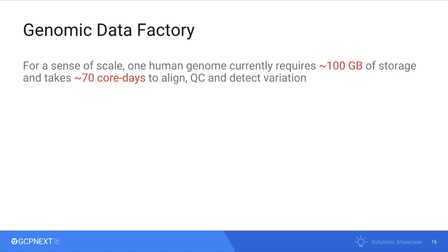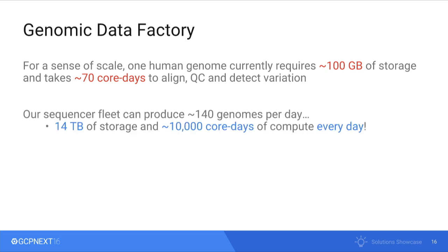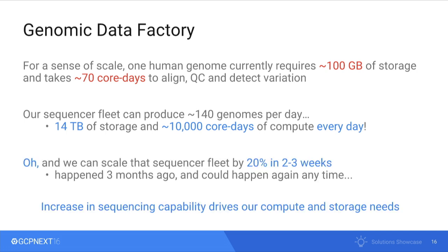Our sequencer fleet can produce 140 genomes a day — that's 14 terabytes of storage and 10,000 core-days of compute every day just to keep up with the pipeline. One human genome requires about 100 gigabytes of storage and takes roughly 70 core-days to complete analysis, QC, and detect variation. And we can scale that by 20% in just two to three weeks, as happened in December. It's really the increase in sequencing capability that drives our compute and storage needs.